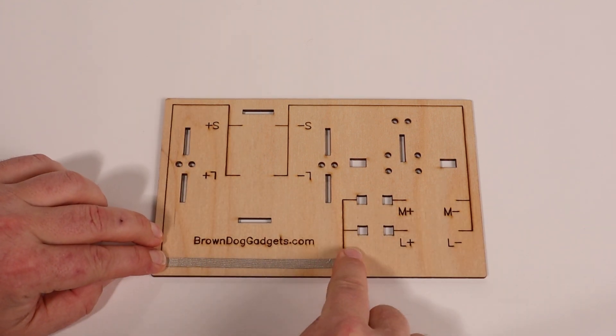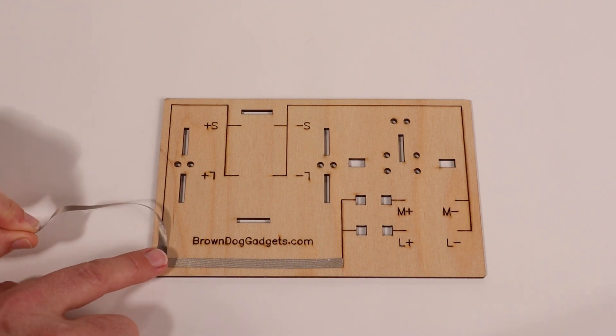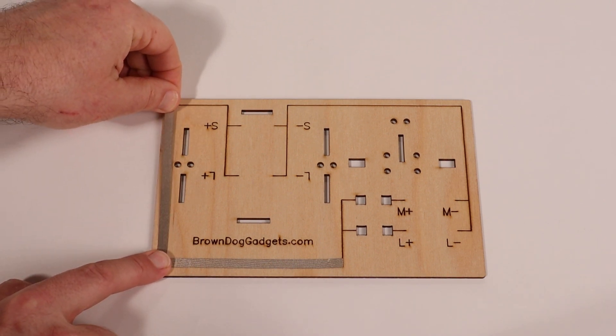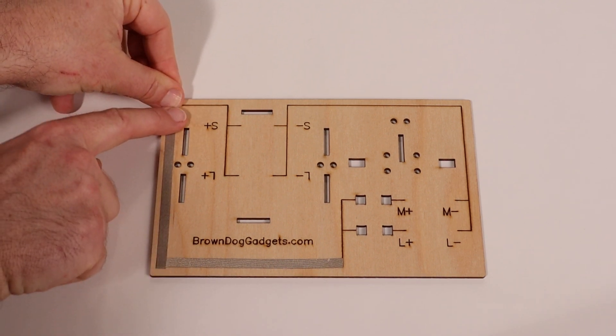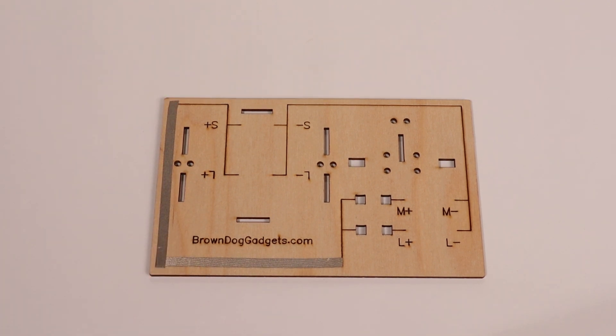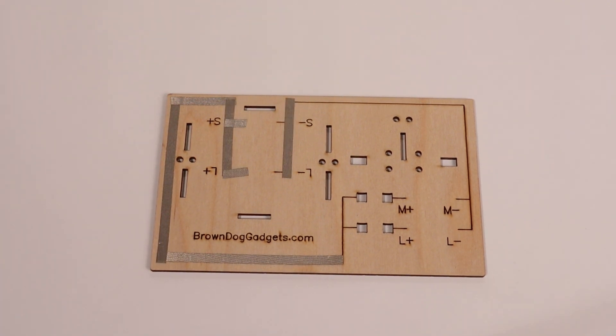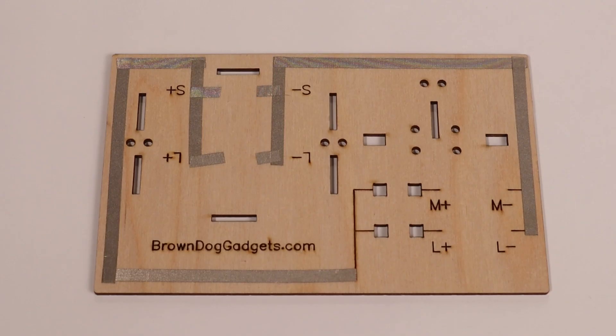The great thing about Maker Tape is that you can overlap it because it's conductive on both sides and all the way through. Overlapping the corners will complete the circuit. Cut and apply Maker Tape on all the etched circuit lines.